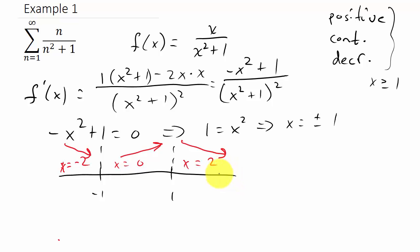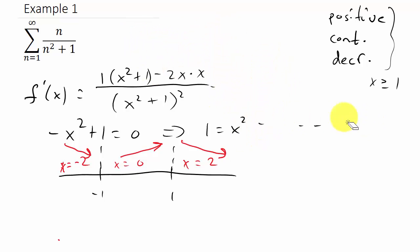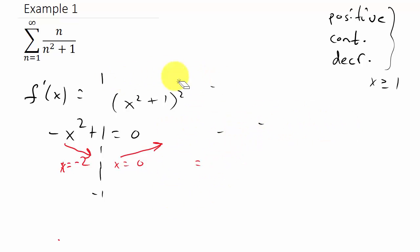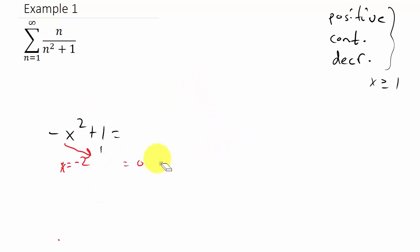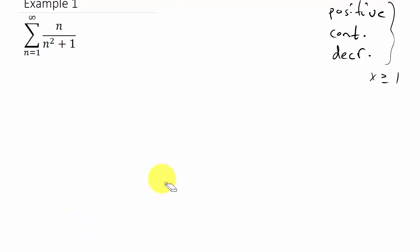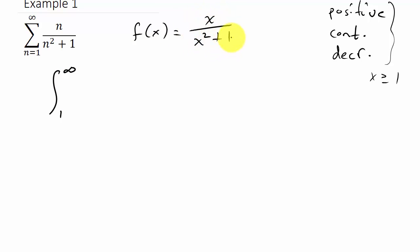We can also see that it is continuous from 1 to infinity. So the function fits all the conditions for the integral test. Now, we're going to integrate from 1 to infinity. f of x equals x over x squared plus 1, and we're going to integrate that with respect to x.